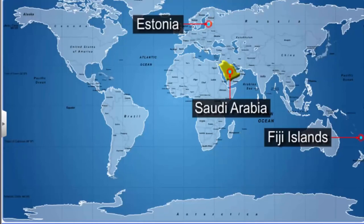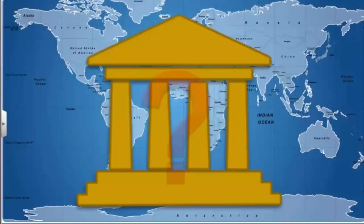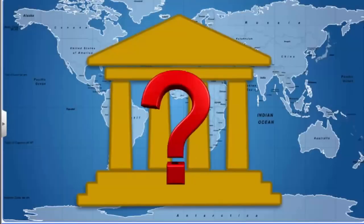Thus, in a democracy, all adults who are citizens of the country should be allowed to vote, each vote having equal value. What happens if the popular government turns out to be undemocratic?